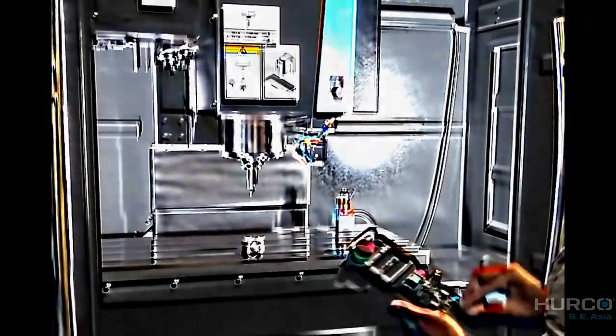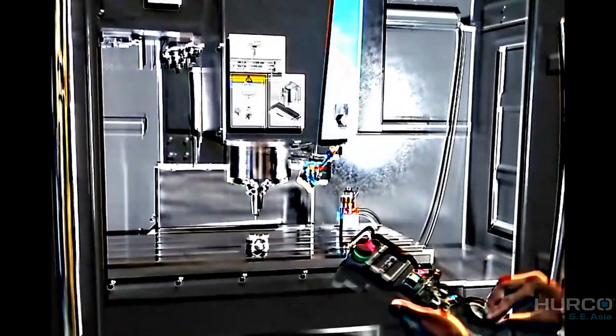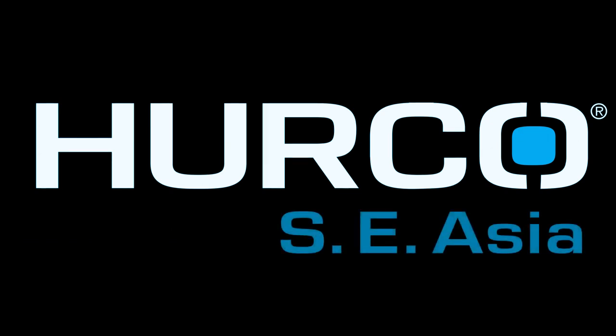So every time you do the absolute tool length procedure, what you need to do is only touch your tool to your gauge device, store position, and machine will automatically calculate the absolute length of the tool for you.